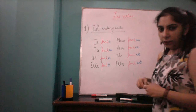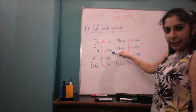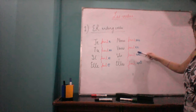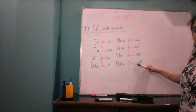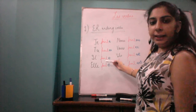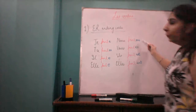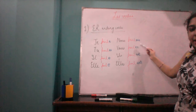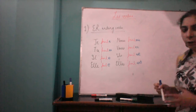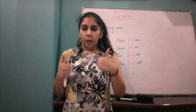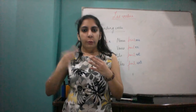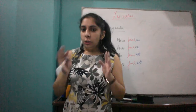Let me repeat the endings: je, tu ES, il E, elle E, nous ONS, vous EZ, ils/elles ENT. So the conjugation of 'parler' is: je parle, tu parles, il parle, elle parle, nous parlons, vous parlez, ils/elles parlent.